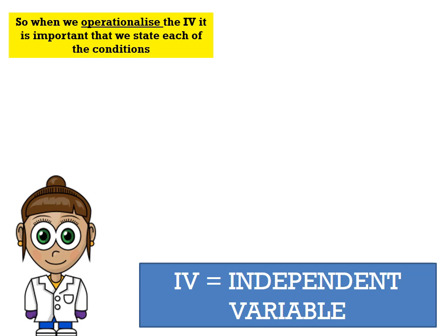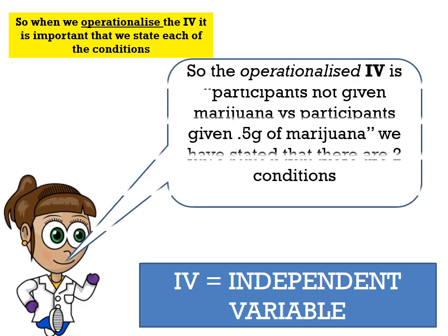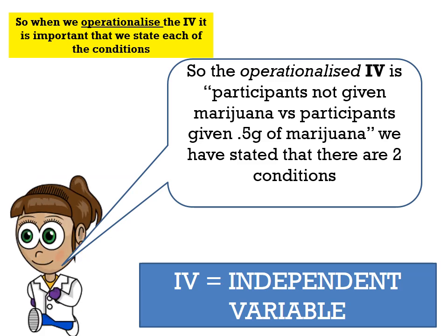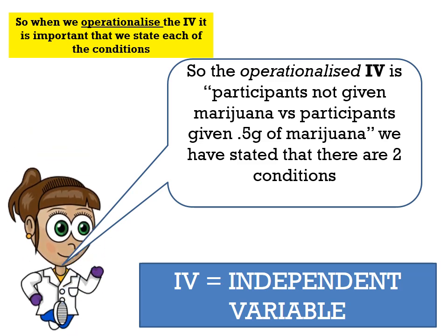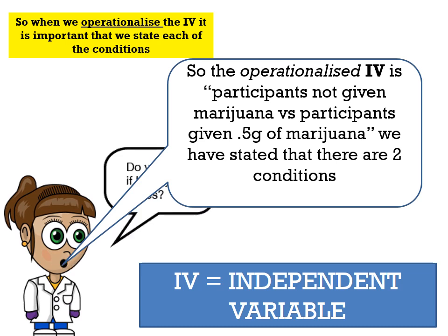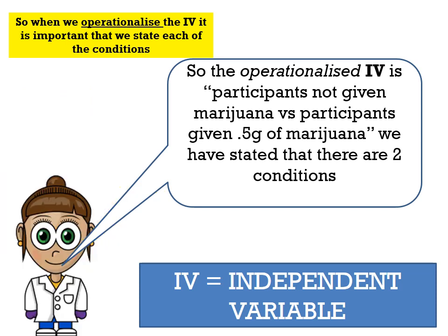When we operationalise the IV, it's important that we state each of the conditions. For our experiment on marijuana and reaction time, the operationalised IV is: participants not given marijuana — that's our first condition — versus participants given 0.5 grams of marijuana — that's our second condition. So we have stated that there are two conditions.